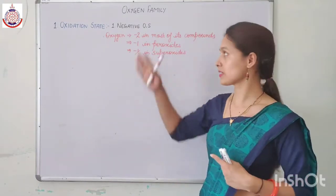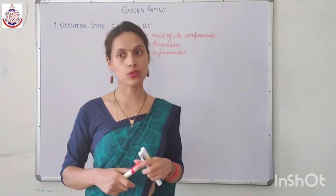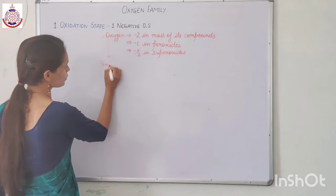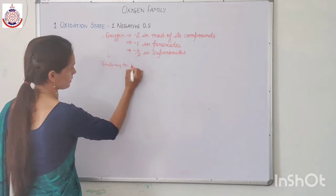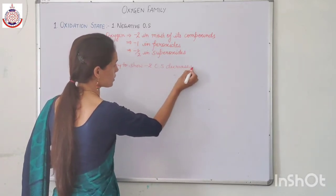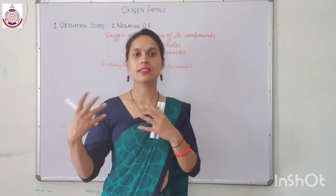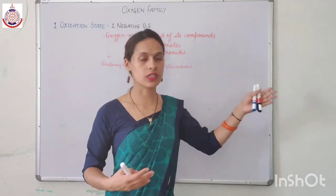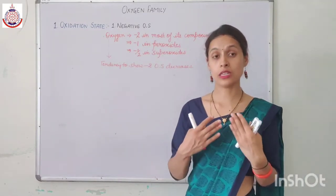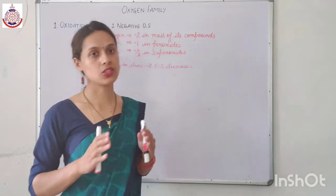Because of less electronegativity and larger size, the other elements of this group have lesser tendency to form the minus two oxidation state. As we move down the group, tendency to show minus two oxidation state decreases, because electronegativity decreases and size increases. Polonium is the least electronegative element of this family.